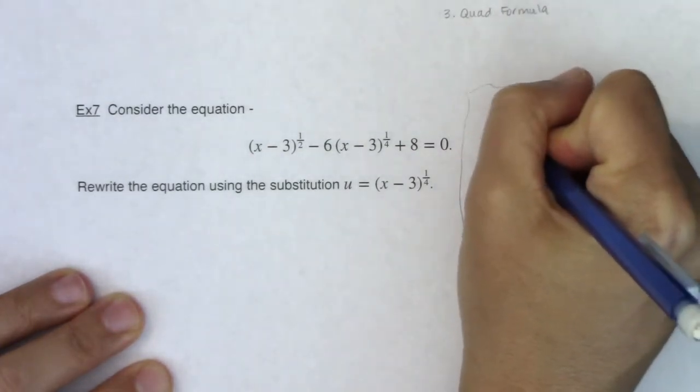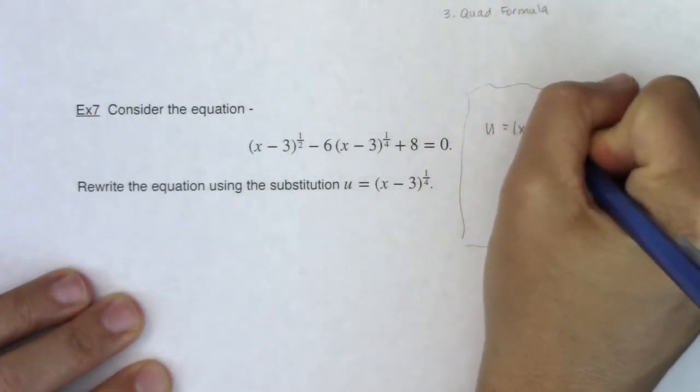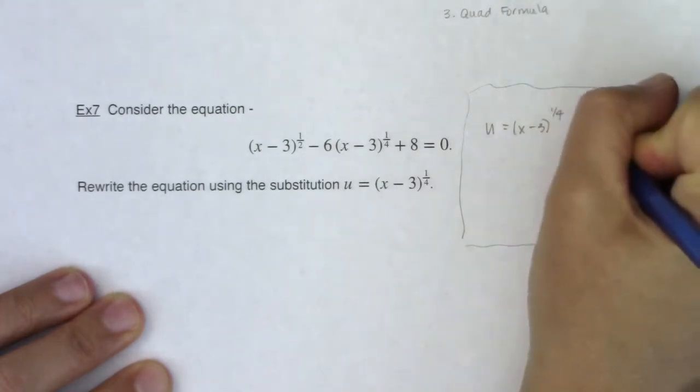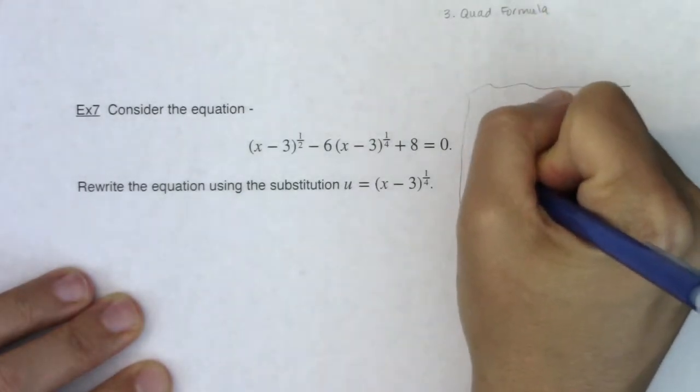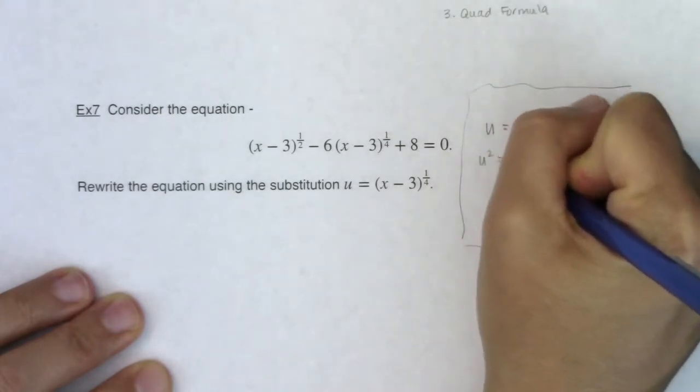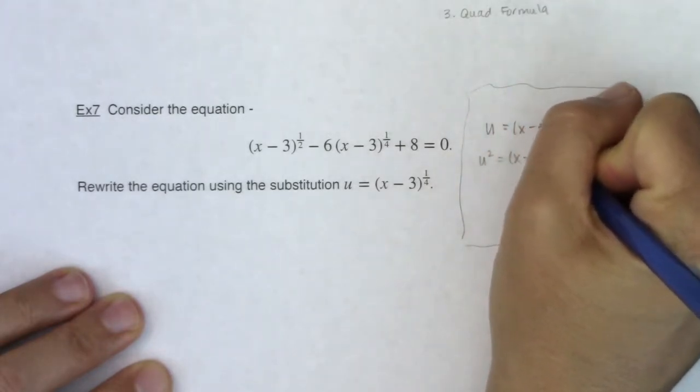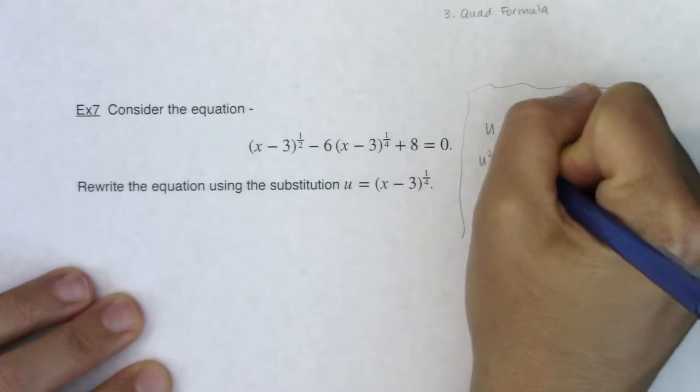So when you have u equaling x minus 3 to the 1/4, much like example 6, I want you to square both sides. I want you to see what's happening. So if I square both sides I'm going to get u squared equaling x minus 3 to the 1/4 and that's going to be squared.